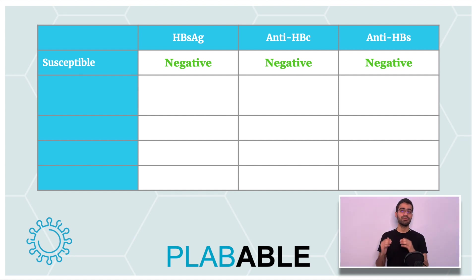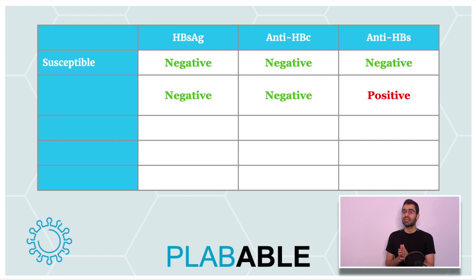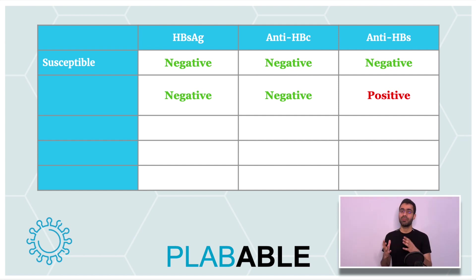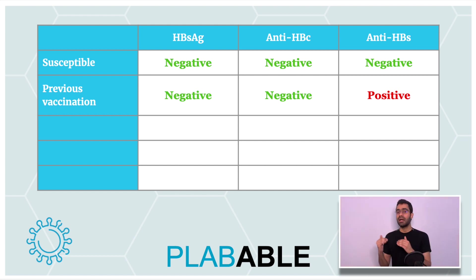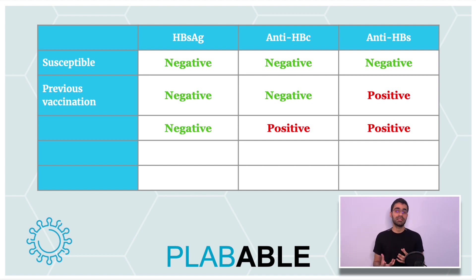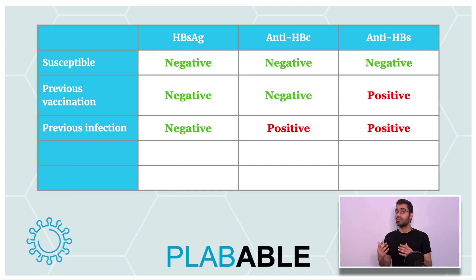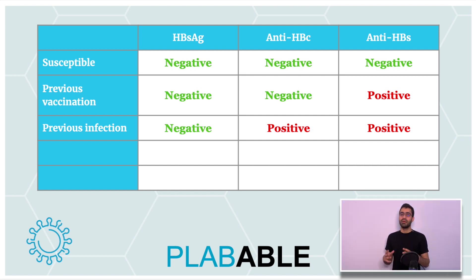In the second row, only anti-HBs is positive, which means that this person has gained anti-HBs from a vaccination. In the third row, both anti-HBc and anti-HBs are positive. This means the person has gained immunity from an infection, and not from a vaccination.